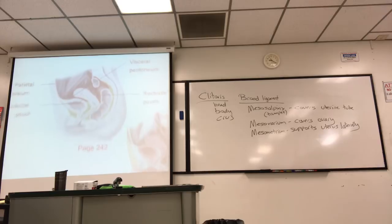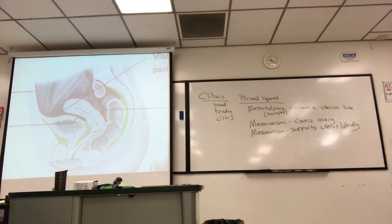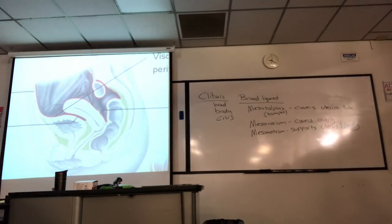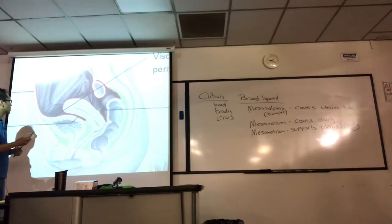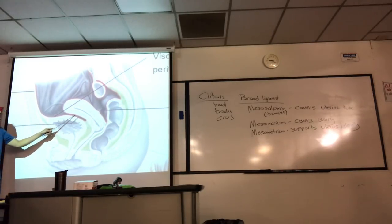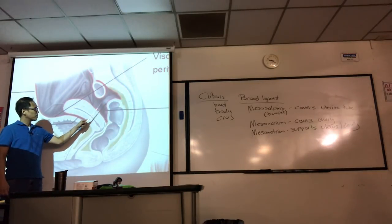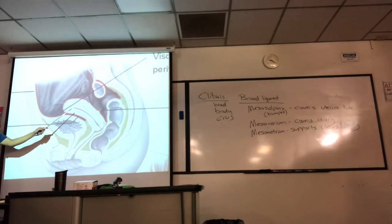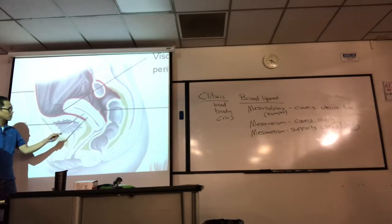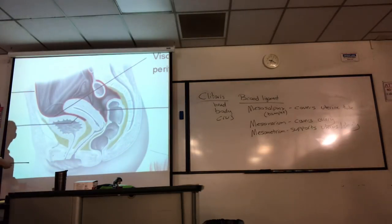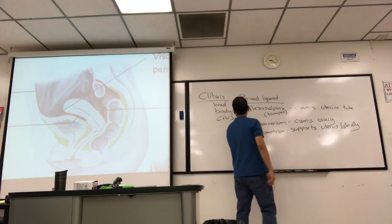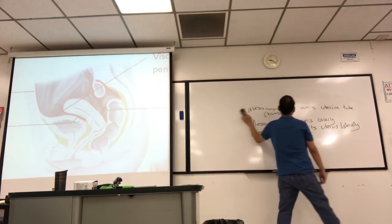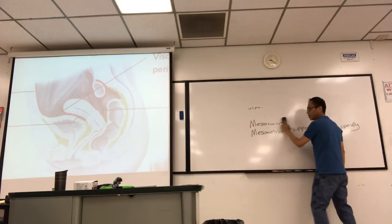Here's a sagittal view of the uterus. This illustration shows how the peritoneum covers the viscera, creating pouches. The peritoneum covers and goes around the uterus, creating a little recess. The pouch between the bladder and the uterus is the vesico-uterine pouch. The pouch between the uterus and rectum is the recto-uterine pouch. Those aren't present in males because they don't have a uterus — these pouches are specific to females, in front of and behind the uterus.